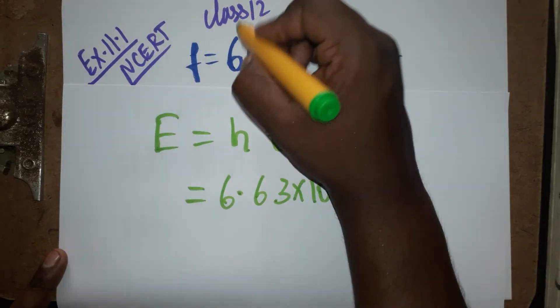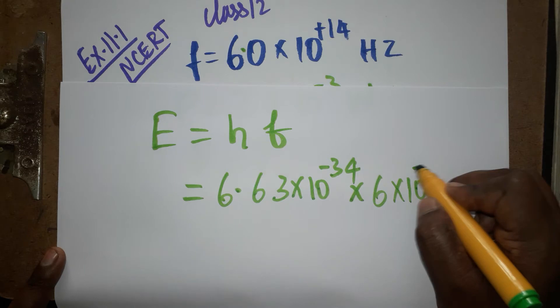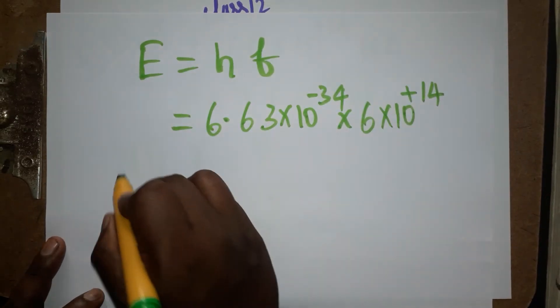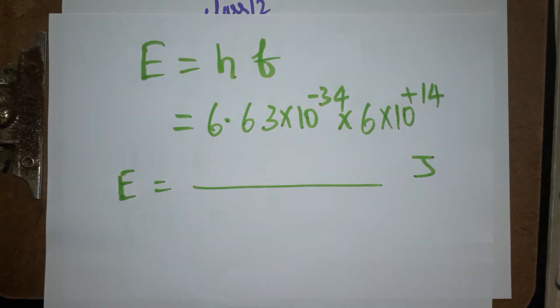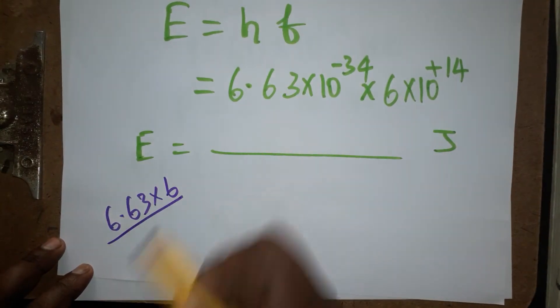Frequency is given as 6.0 into 10 power 14. Energy unit will be joules. We have to multiply these two: 6.63 into 6.